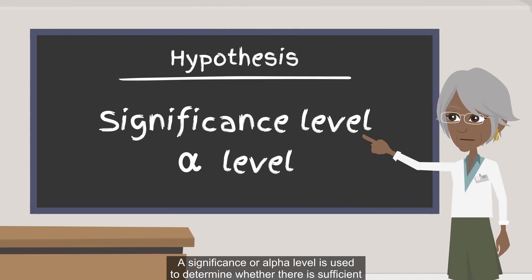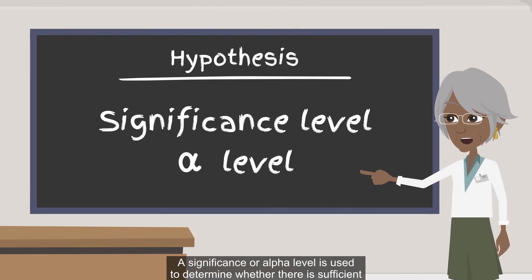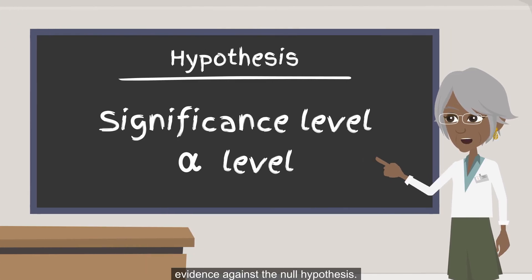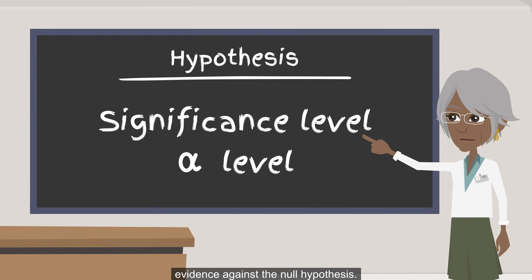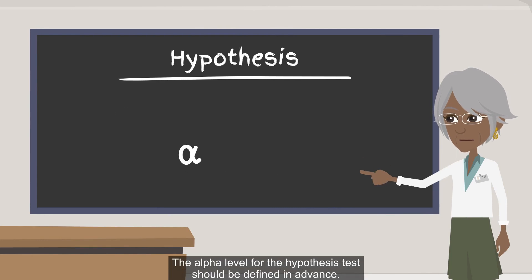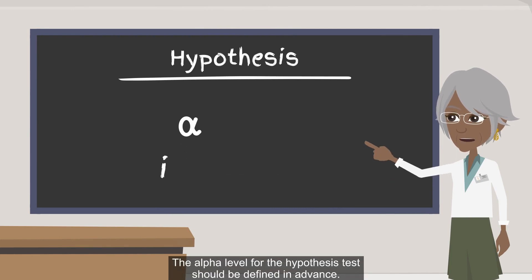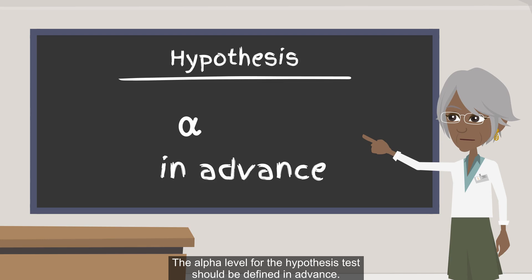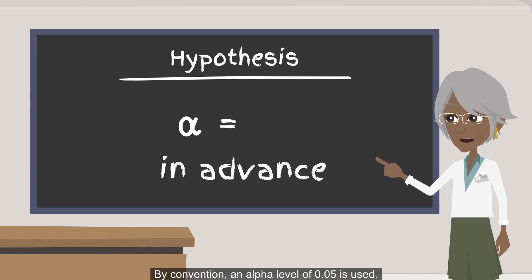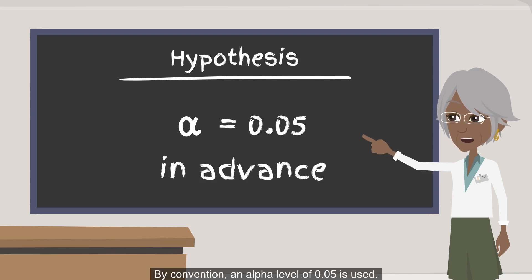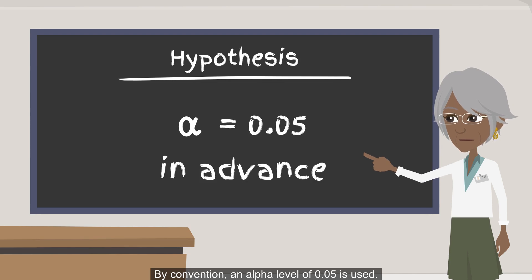A significance or alpha level is used to determine whether there is sufficient evidence against the null hypothesis. The alpha level for the hypothesis test should be defined in advance. By convention, an alpha level of 0.05 is used.